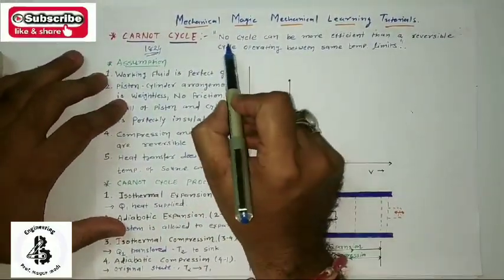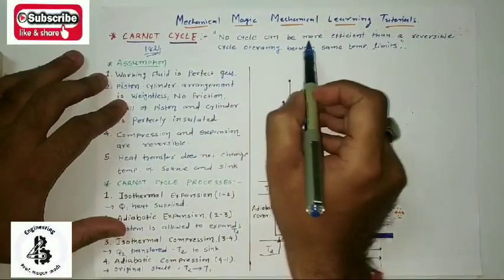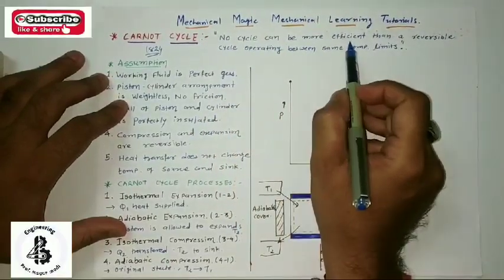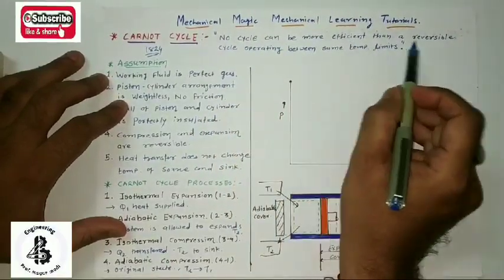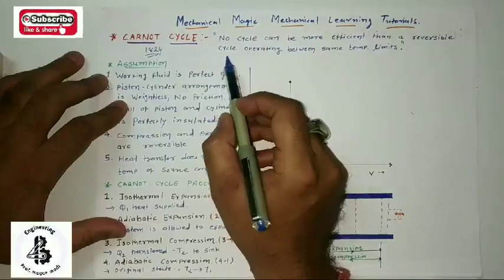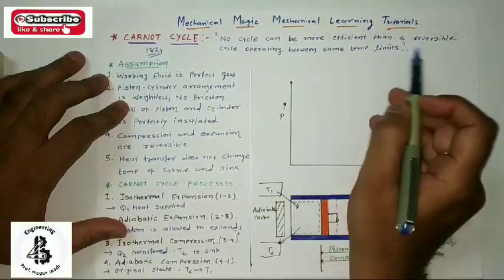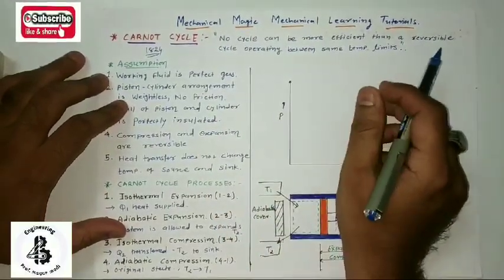What the Carnot theorem says is: no cycle can be more efficient than a reversible cycle operating between the same temperature limits.